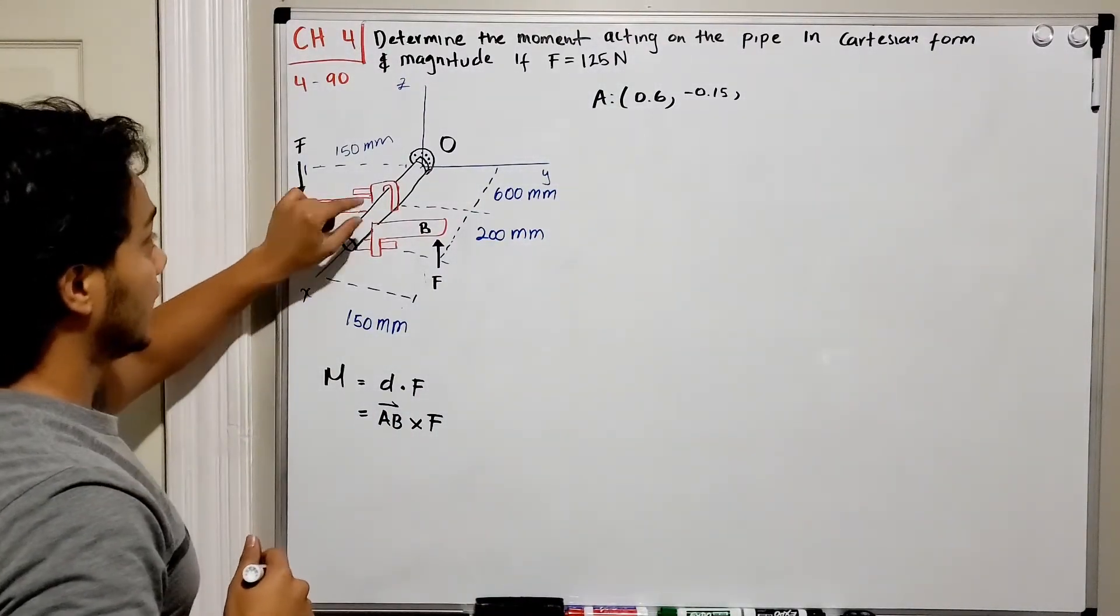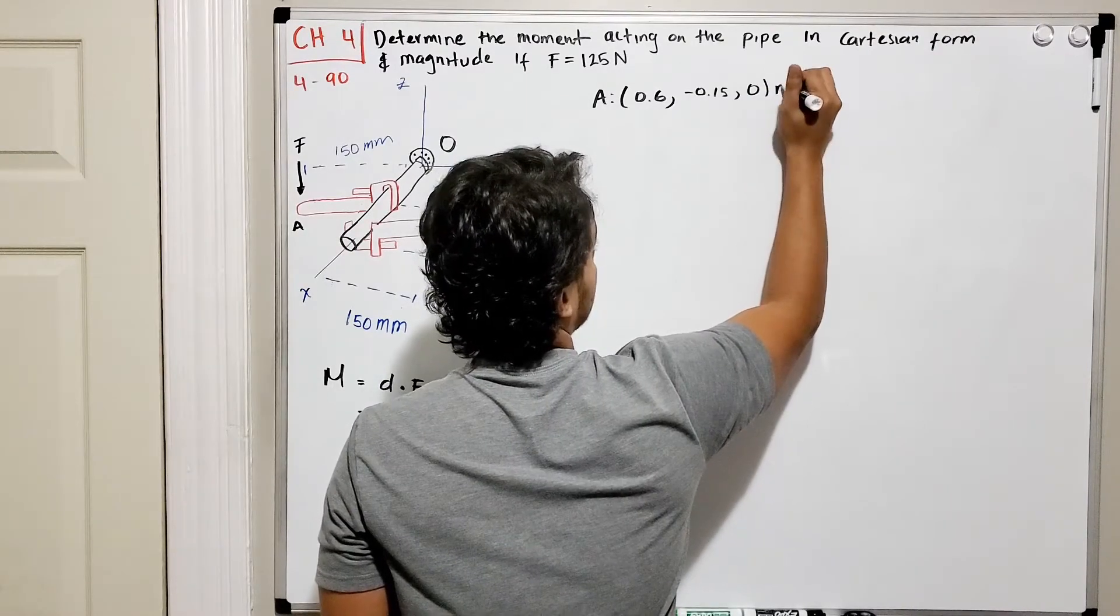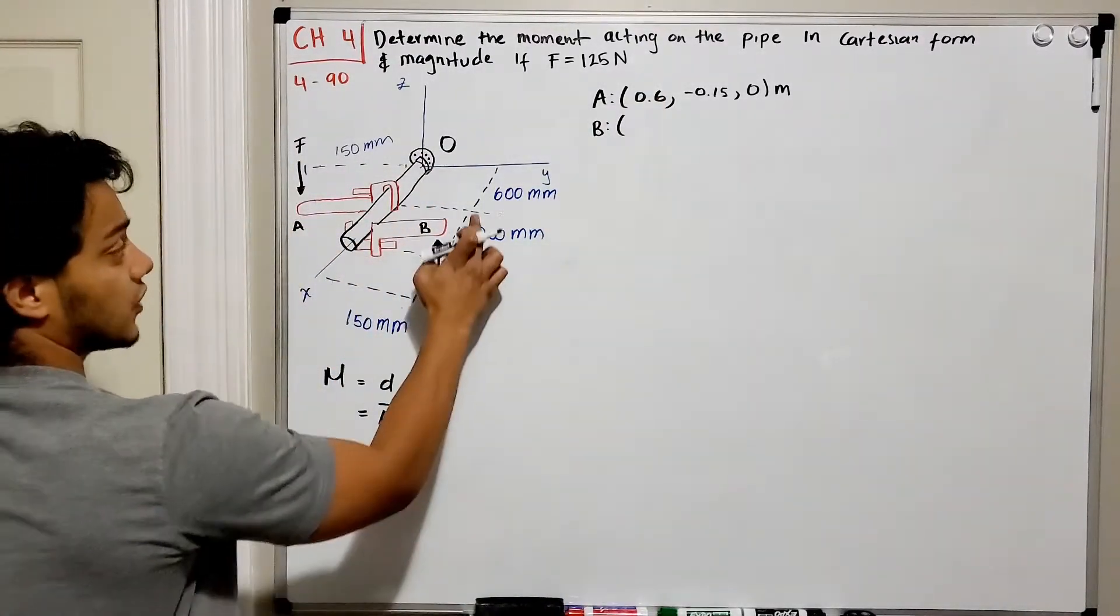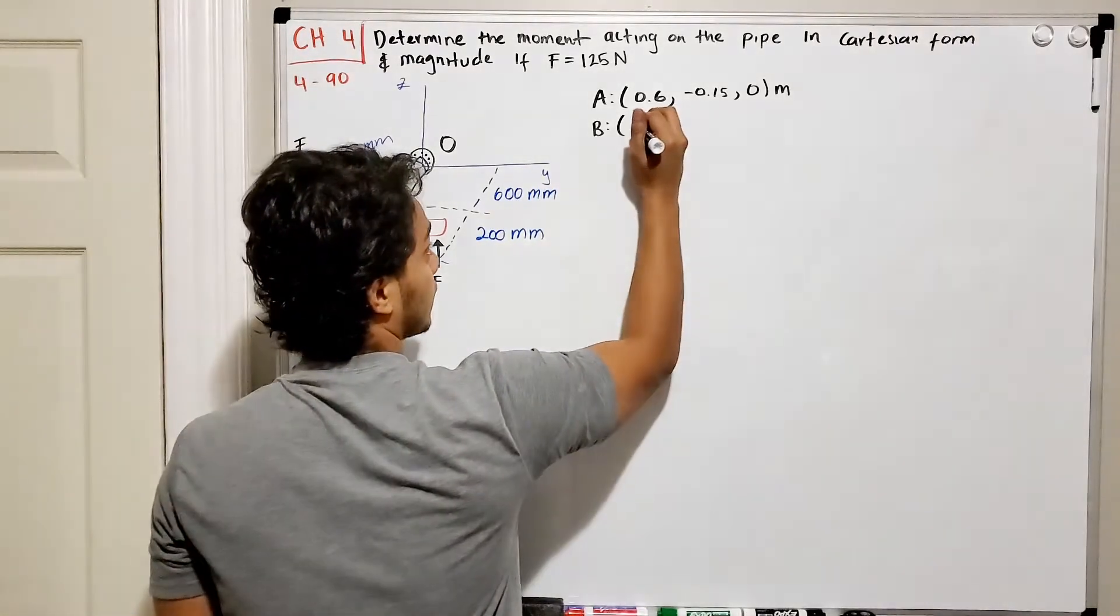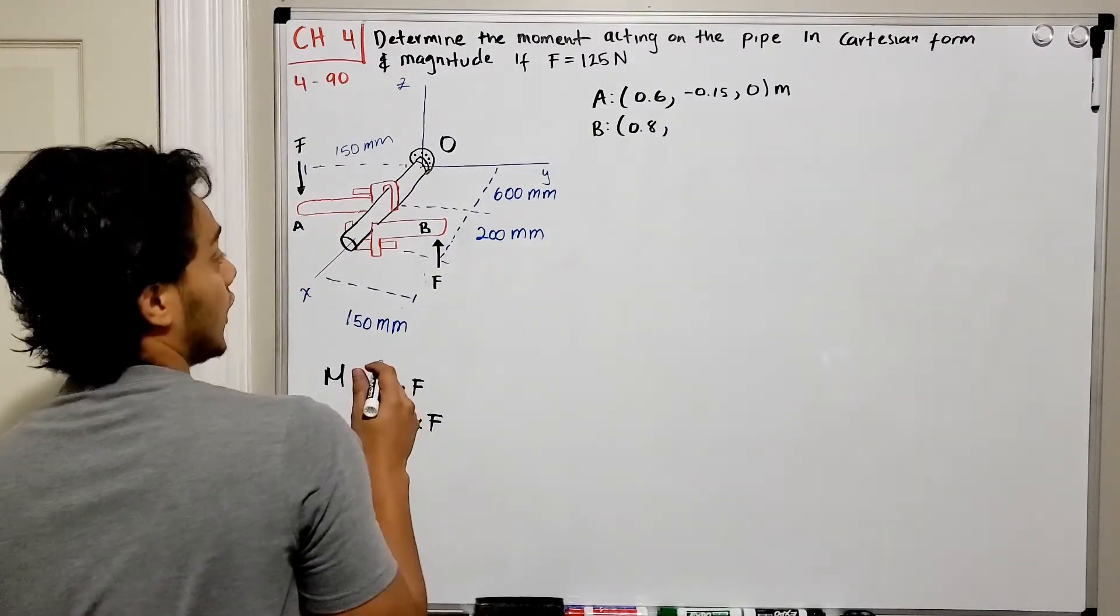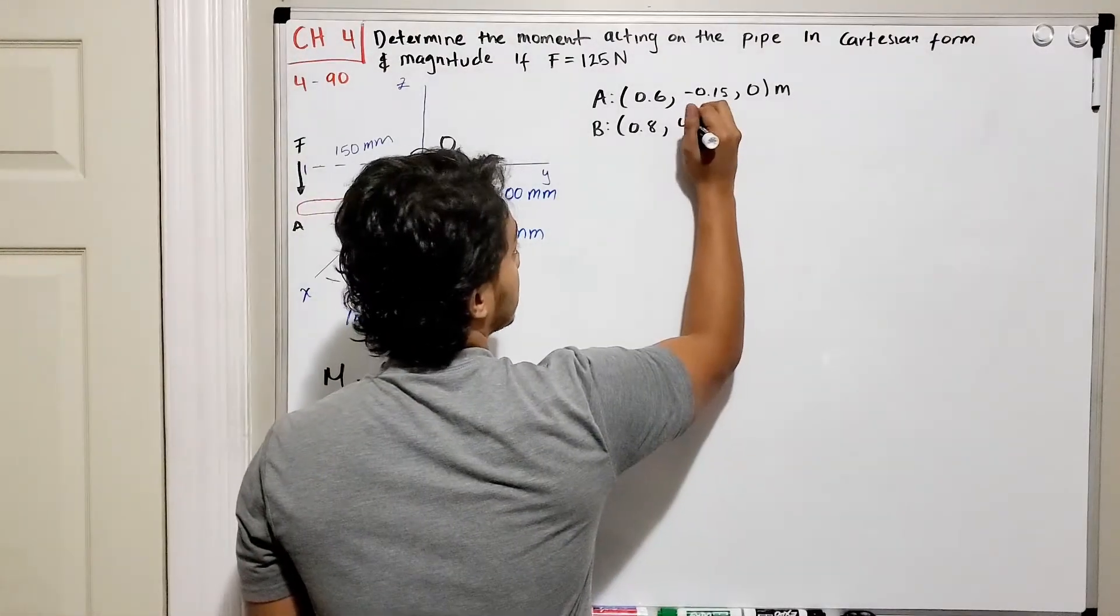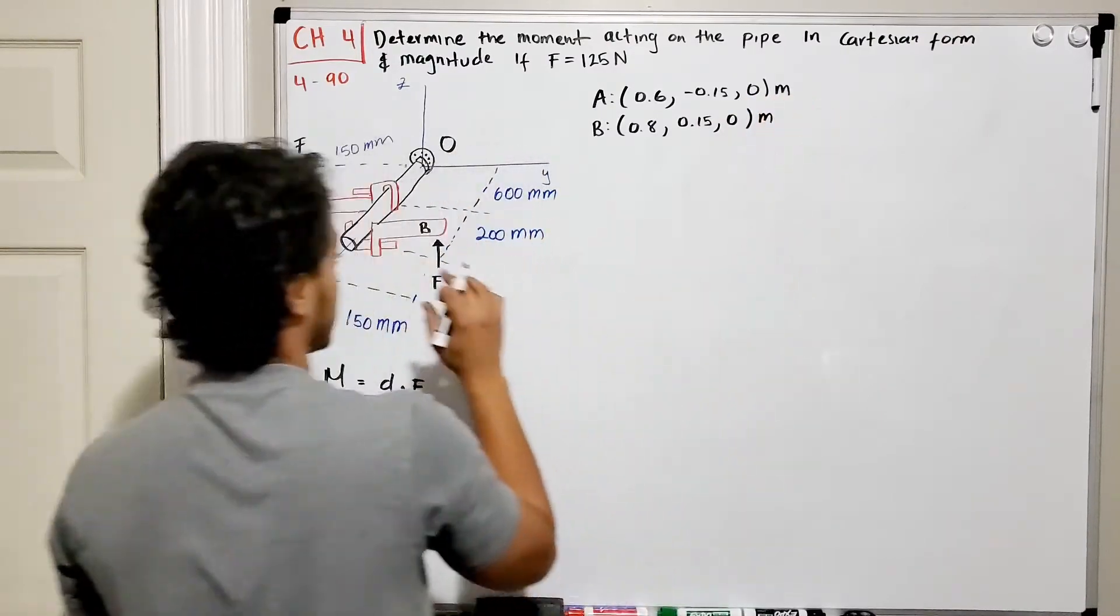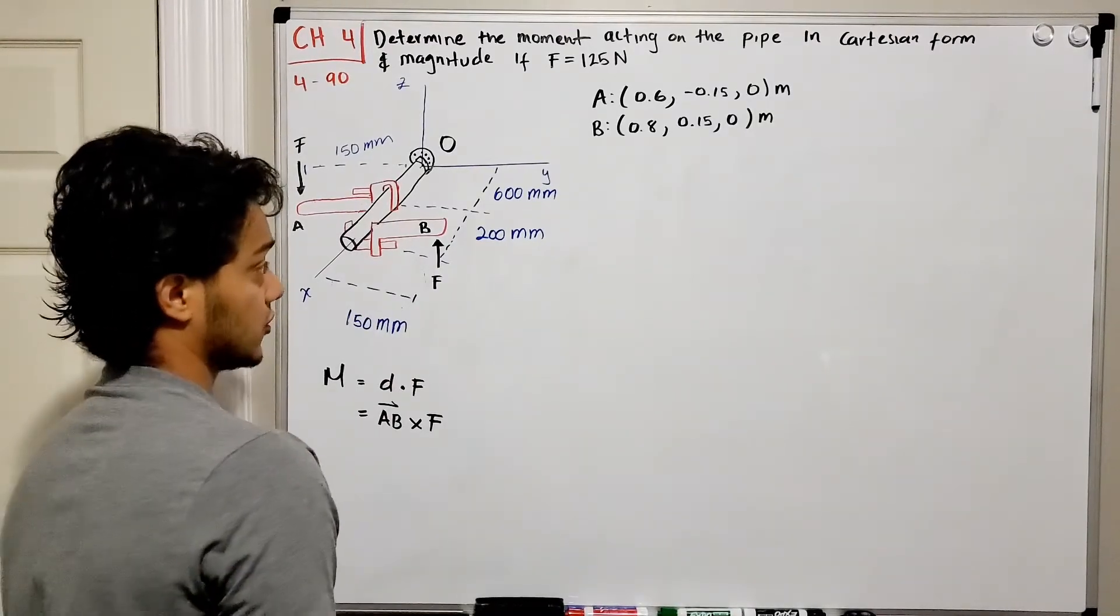And both of them are exactly at zero level of my Z, this is in meters. For my B, what do we have in the x-direction? I have 600 plus 200 is equal to 800 mm so we got 0.8 meters if we convert it right away. In the y-direction we have positive 150 mm so we got 0.15 if we convert it into meters, and it also has zero in my Z direction.